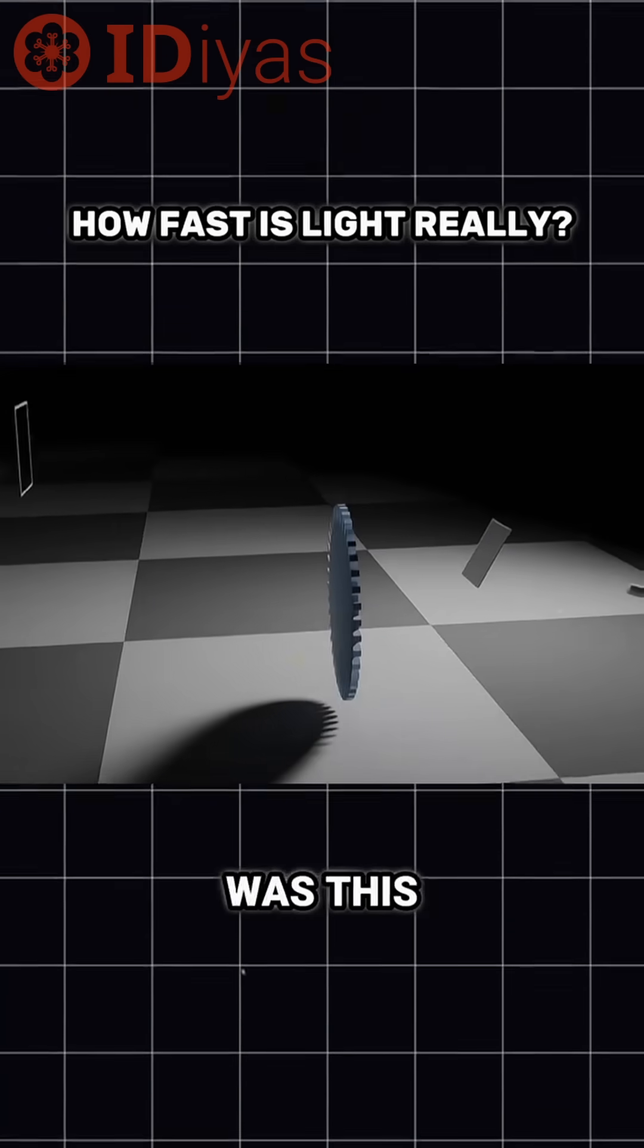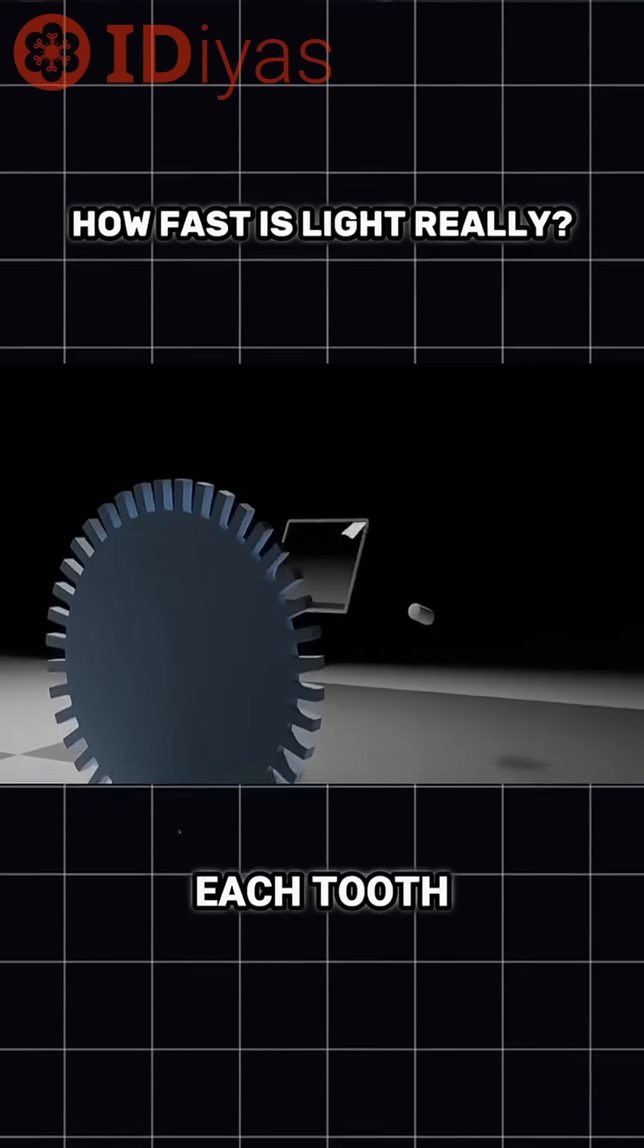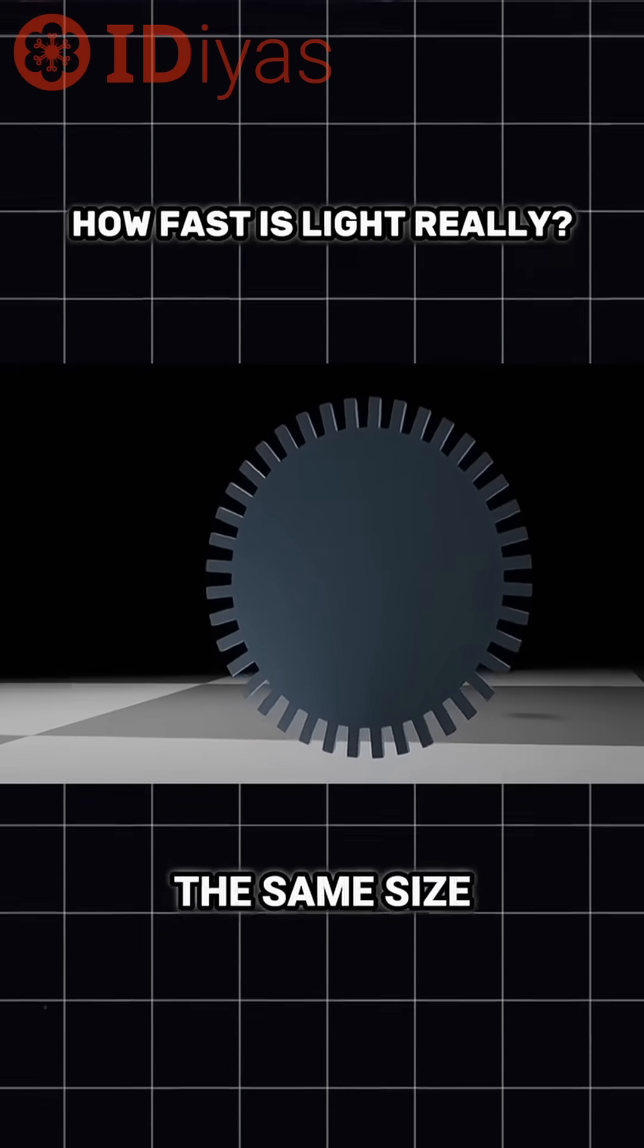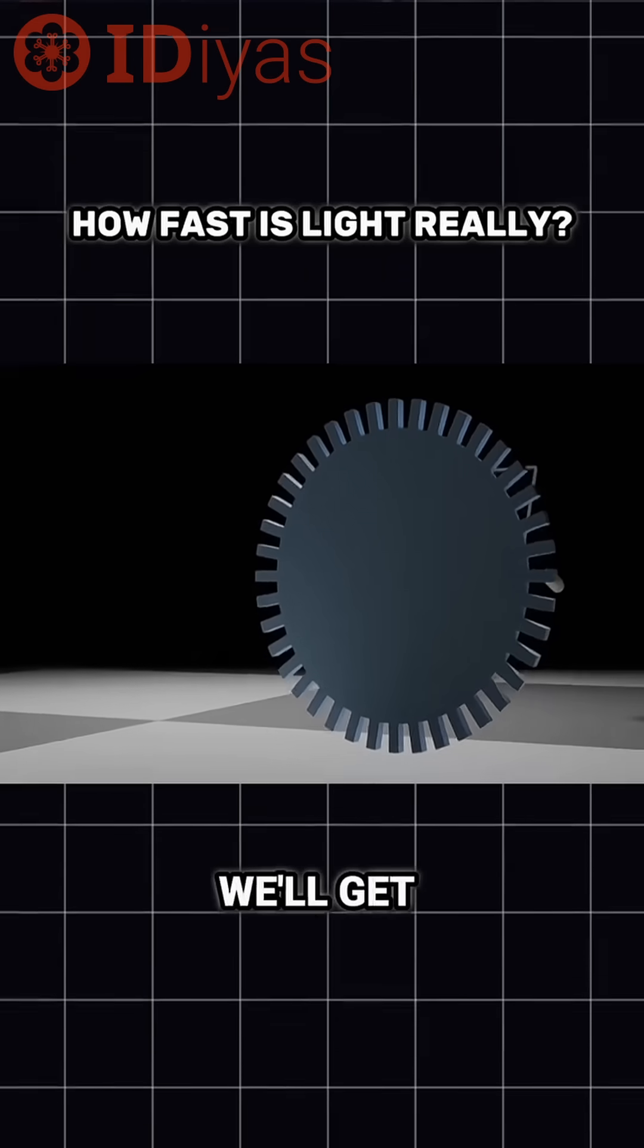The key to his experiment was this, a special toothed wheel. Each tooth and each gap between the teeth was exactly the same size. So what was the point of that? We'll get to it in a second.